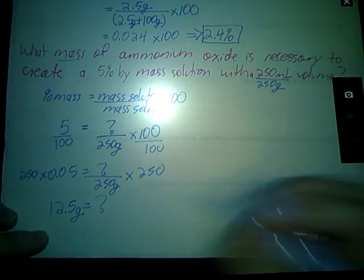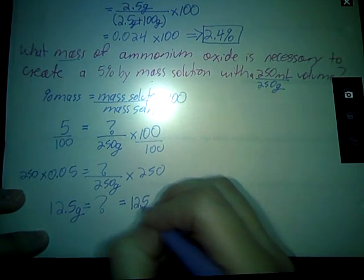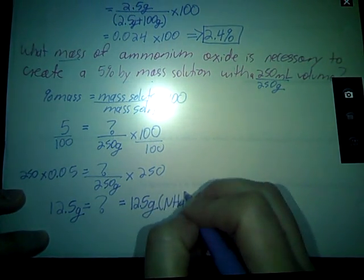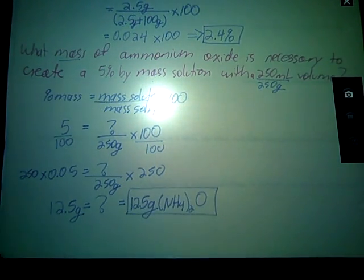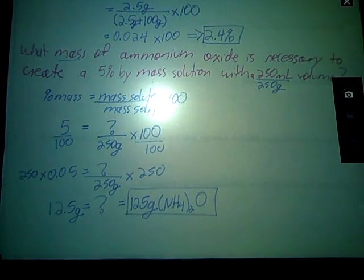So, I need 12.5. Let's follow my own rules here. 12.5. Number. Unit. Thing. So, 12.5 grams of ammonium oxide should give me a 5% by mass solution.